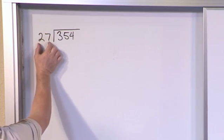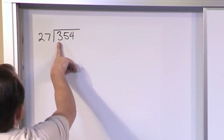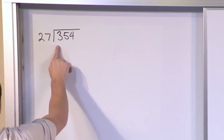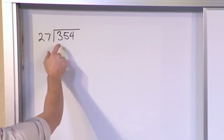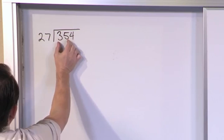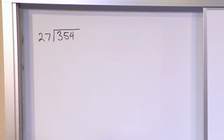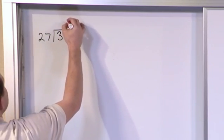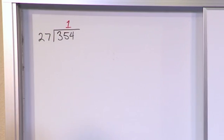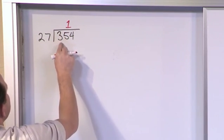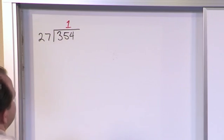First thing you do is you take 27 and you try to see if it will divide at least one time into three. There's no way 27 is going to fit into three so you can't do that. So then you look at the first two numbers 35. Does 27 divide into 35 at least one time? The answer is yes. 27 is going to go into 35 only one time. So you put a 1 here. And you put a 1 over the 5 to signify that you were looking at both of these digits here.